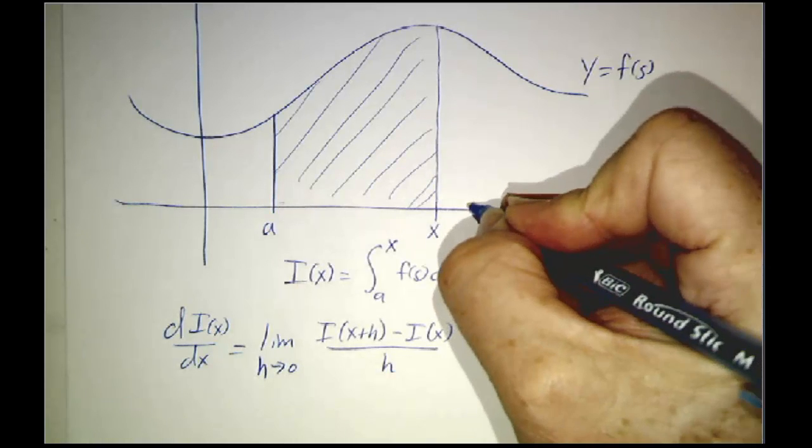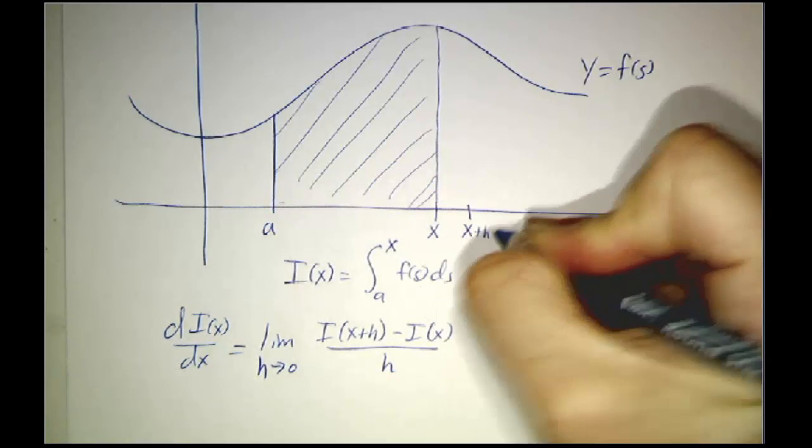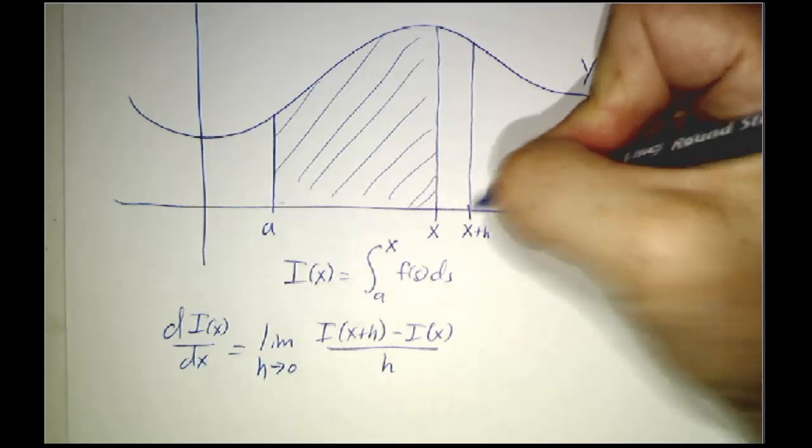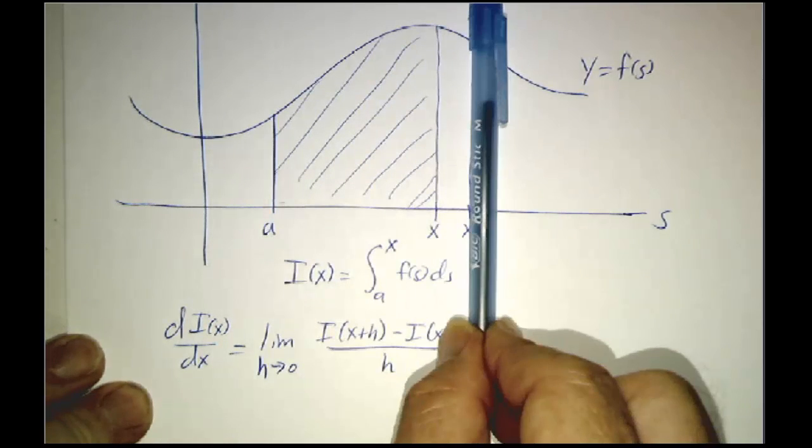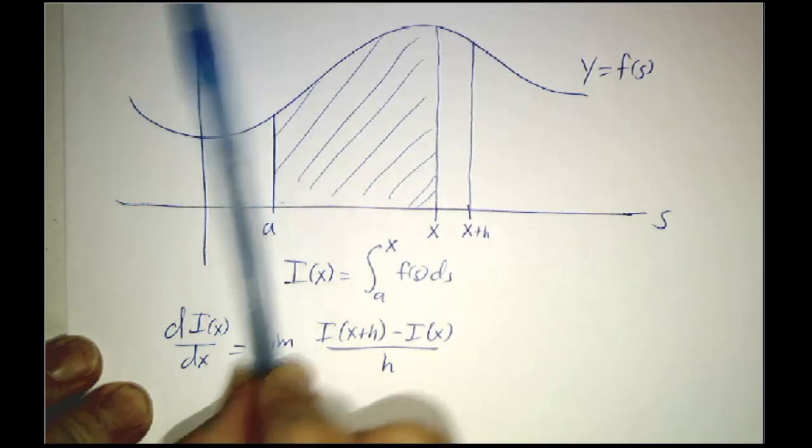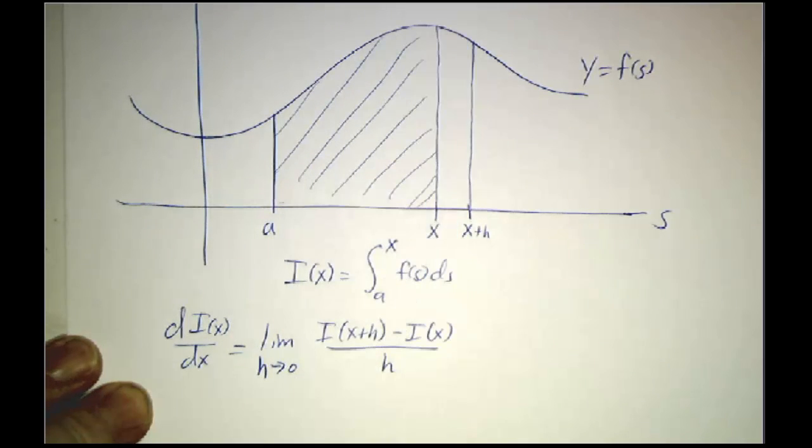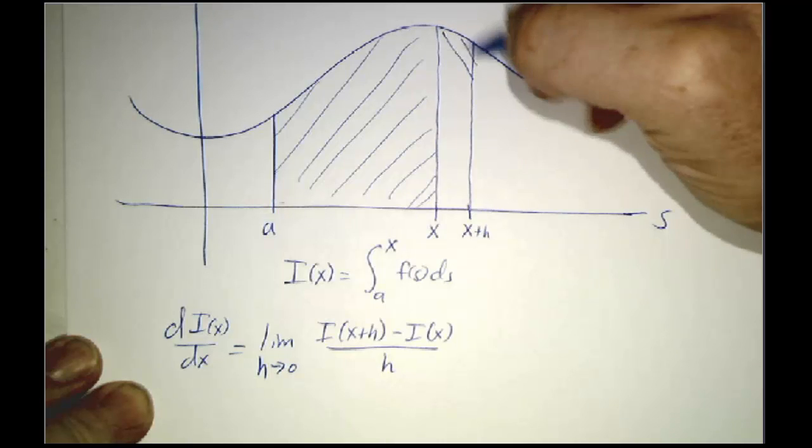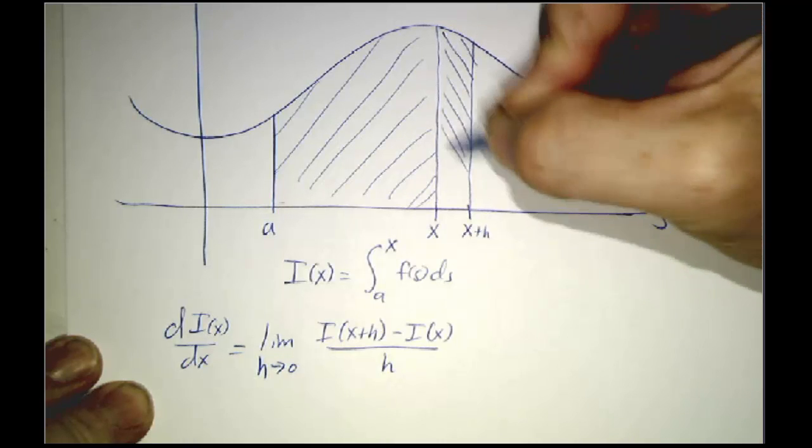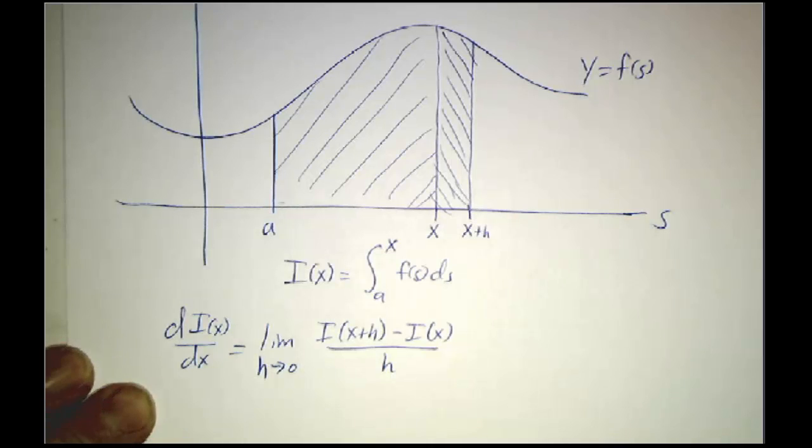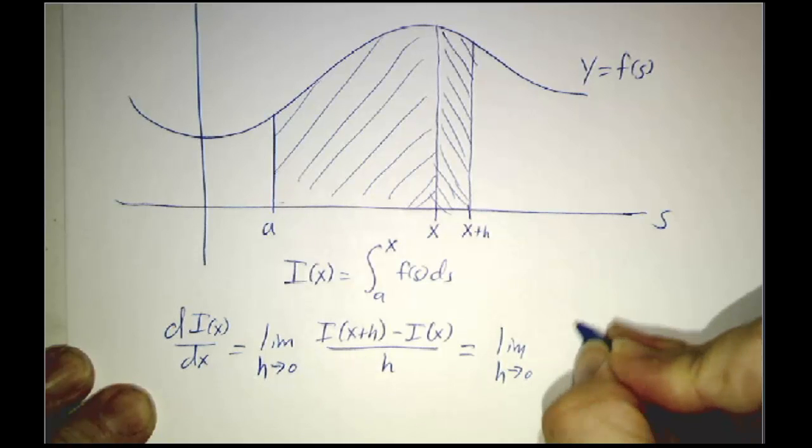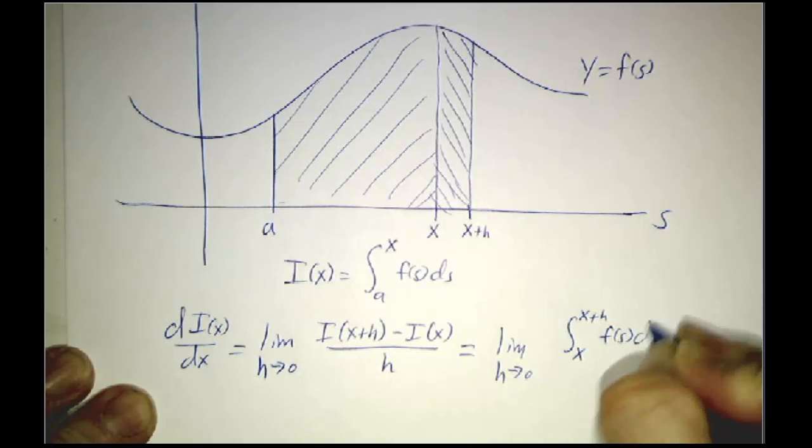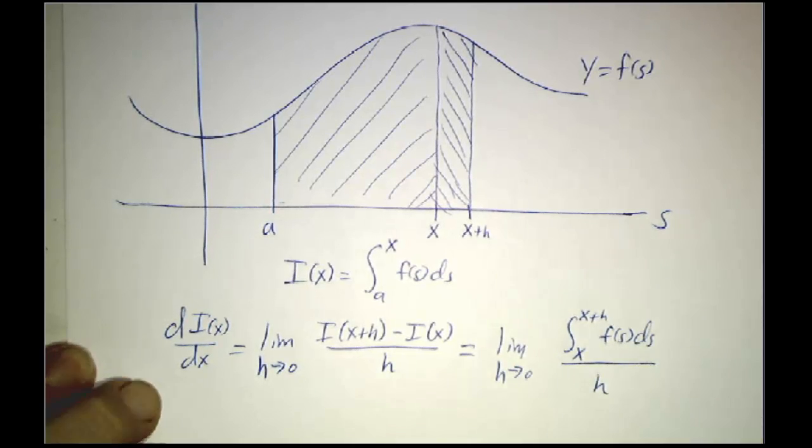So let's draw the point x plus h here and see what is I of x plus h. Well, I of x plus h is all the area from a to x plus h. And I of x is all the area from a to x. So the difference is all of the area between x and x plus h. In other words, it's the integral from x to x plus h of f of s ds. And we're dividing everything through by h.